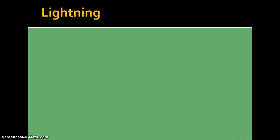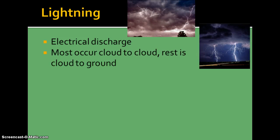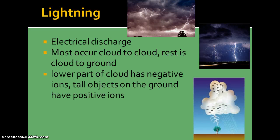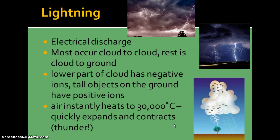Lightning is usually associated with thunderstorms. It's just a discharge of electricity. Most lightning actually occurs cloud to cloud, and occasionally it goes cloud to ground or cloud to tree. The lower part of the cloud builds up a negative charge — it has negative ions — while the top part of the cloud has positive ions. The negative charges repel the negative charges in the ground, so the top of a tree ends up with a positive charge. The electrons are then attracted to those positive ions because opposite charges attract. When that happens, the air instantly heats up and quickly expands, and as soon as the electrons have jumped, it cools down and contracts. It's that contracting air — that rushing noise — that creates thunder.